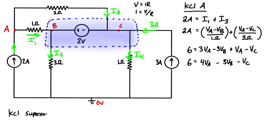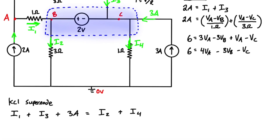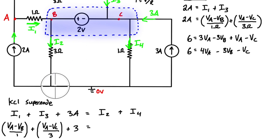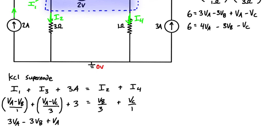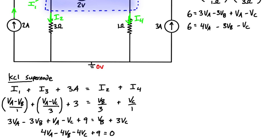Now we write KCL at the supernode: currents in equal currents out, so I1 + I3 + 3 amps = I2 + I4. We already have expressions for I1 and I3. For I2, the voltage drop is Vb minus zero, so I2 = Vb/3. For I4, the drop is Vc minus zero, so I4 = Vc/1. Substituting and simplifying gives: 4Va − 4Vb − 4Vc + 9 = 0.